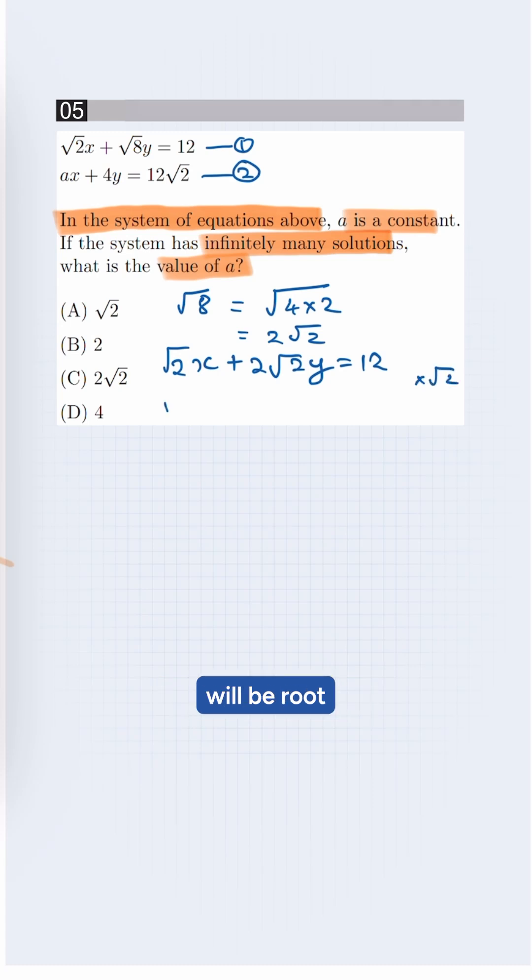The equation will be root 2 into 2 root 2x plus 2 root 2y equals root 2 into 12. It will be 2x plus 4y equals 12 root 2. This is our new first equation.